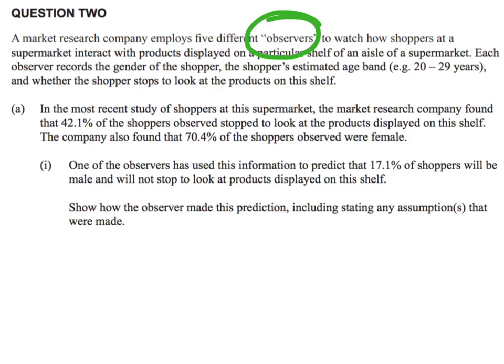Each observer records the gender, the age band, and whether or not they stopped to look at the product on the shelf. In the most recent study, the research company found that 42.1% of the shoppers stopped to look at the products, and 70.4% of the shoppers observed were female.